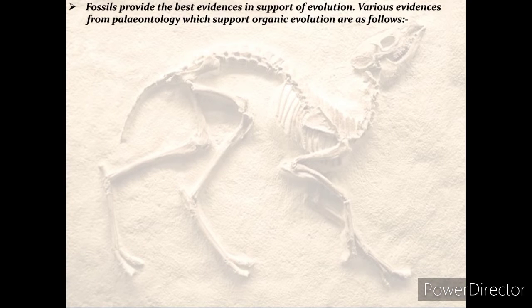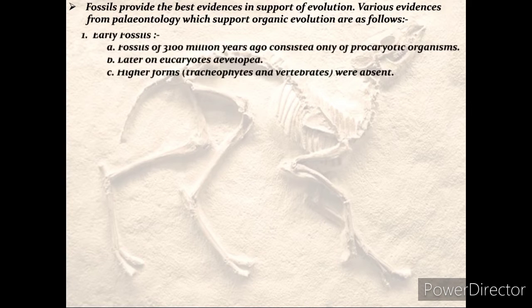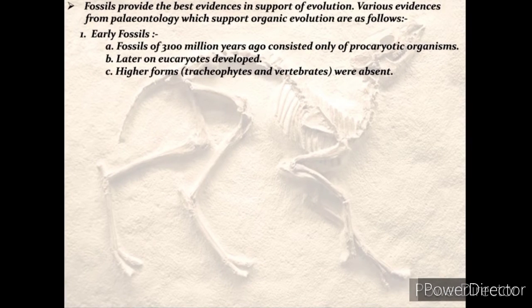Fossils provide the best evidence in support of evolution, showing progressive evolution from earlier to later forms. Early fossils of 3,100 million years ago consisted only of prokaryotic organisms including bacteria and blue-green algae. Later, eukaryotes developed — including algae of various types, protozoans, fungi, and early invertebrates like sponges, cnidarians, annelids, arthropods, and molluscs. Higher forms like tracheophytes and vertebrates were absent in these early periods.